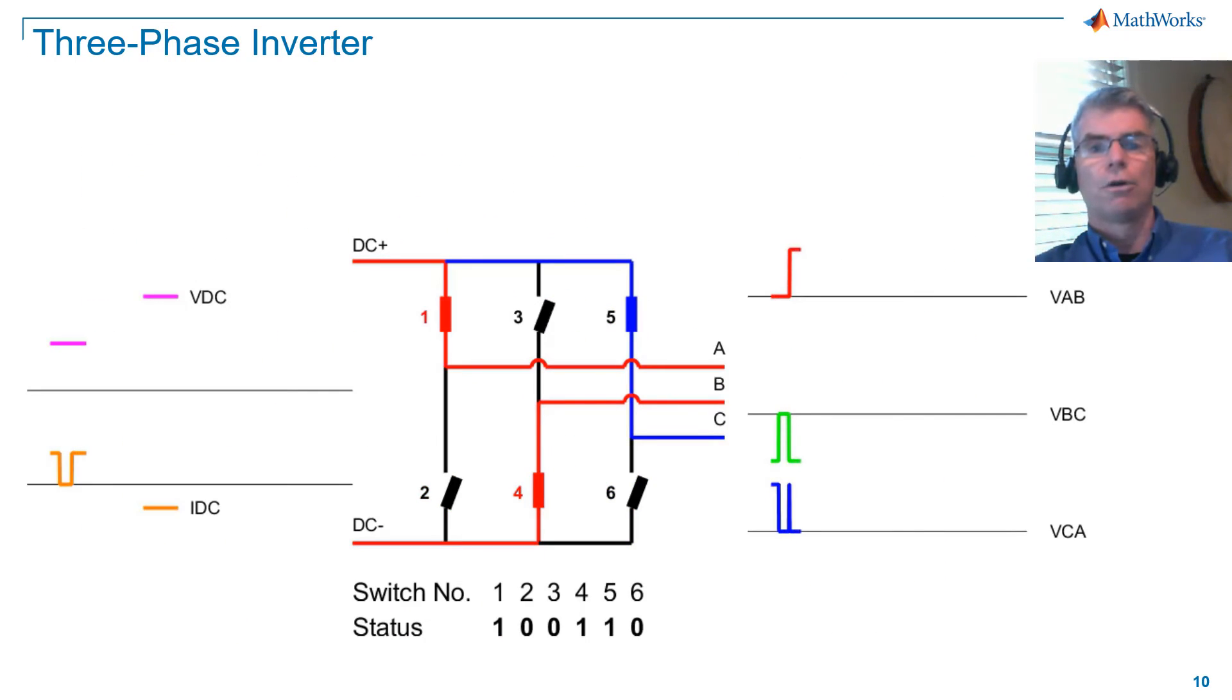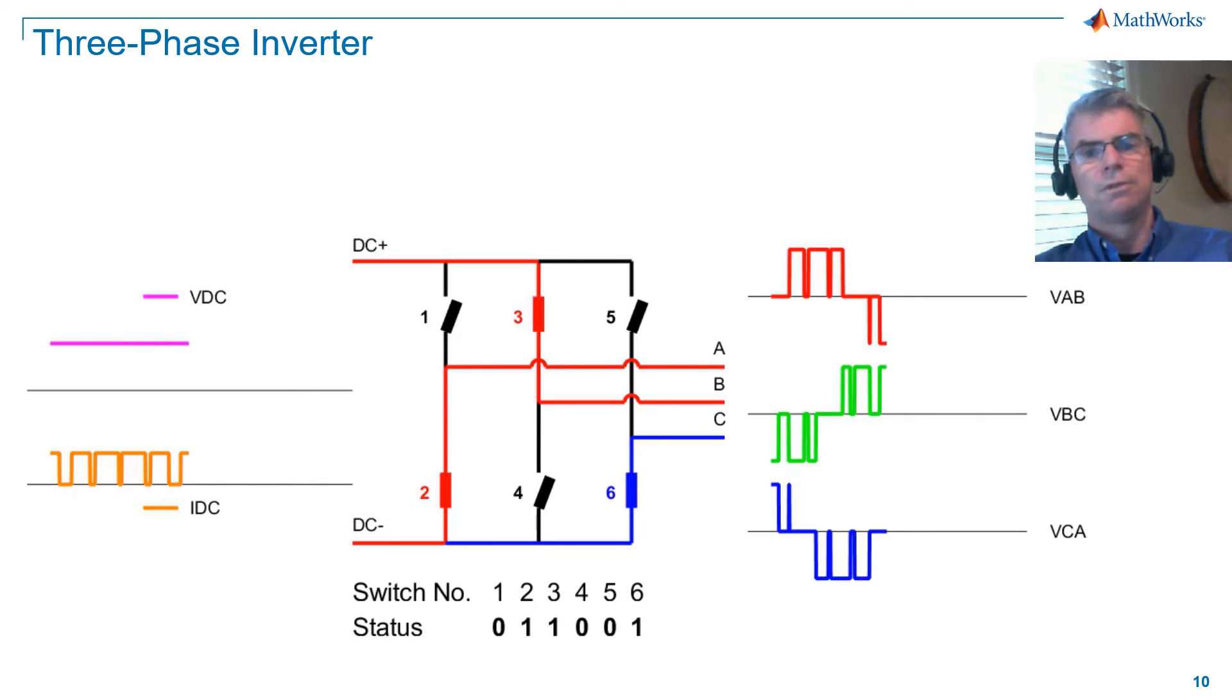Here is our three-phase inverter operating with PWM. If you watch carefully, you'll see that null sequences are being used. During a null sequence, all voltages drop to 0 volts, and DC current drops to 0 amps.